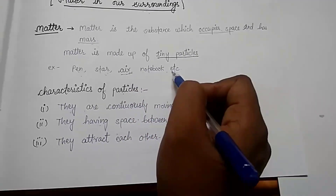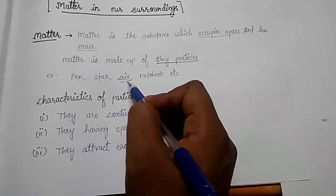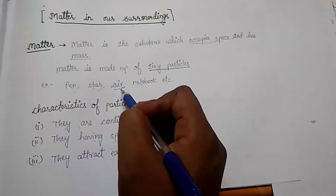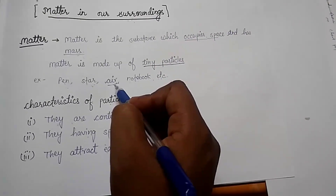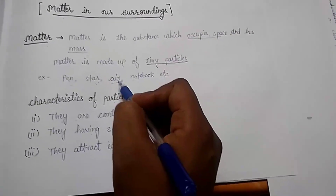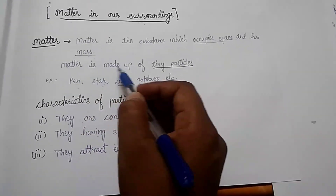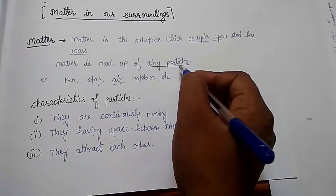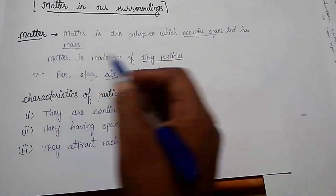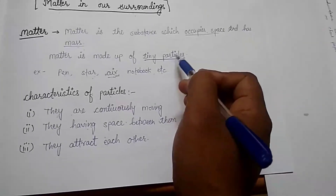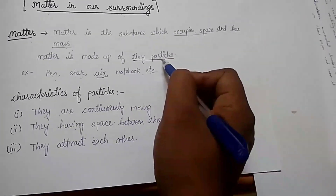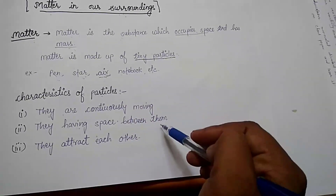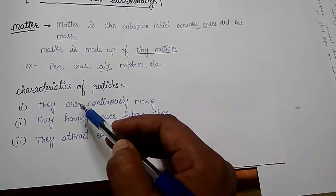Air is also matter. It is because when we fill gas in our cylinder, it occupies space and has mass — that is why air is also matter. Now, matter is made up of tiny particles. Please note: tiny particles are the composition of matter. Now we have to know what are the behaviors of these particles in matter.